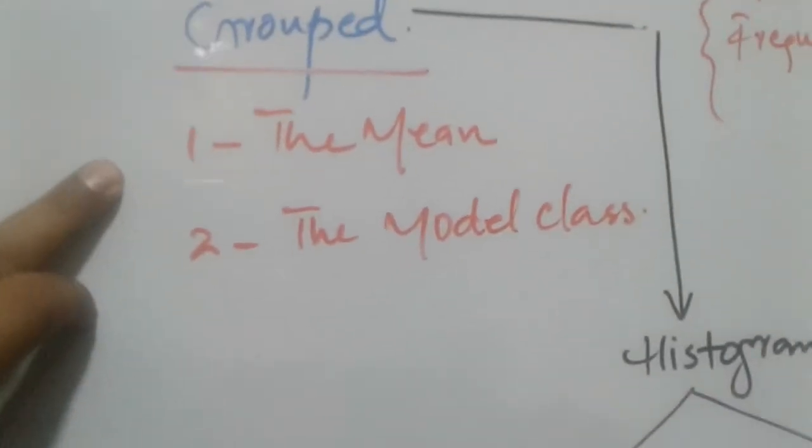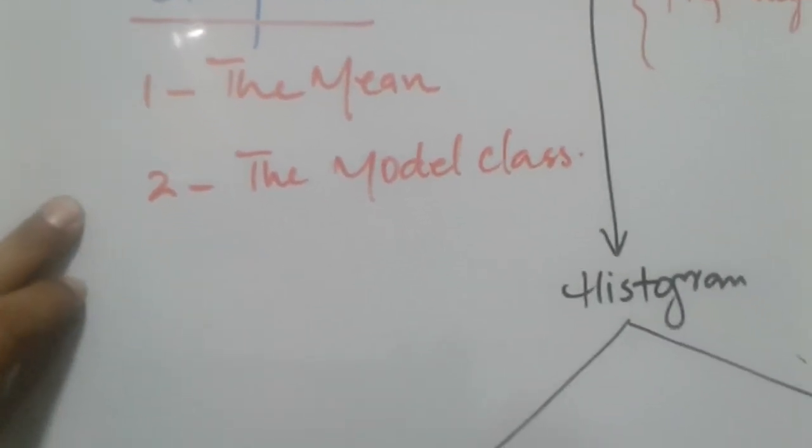In grouped data we study only two things. Number one is the mean, number two is the modal class.